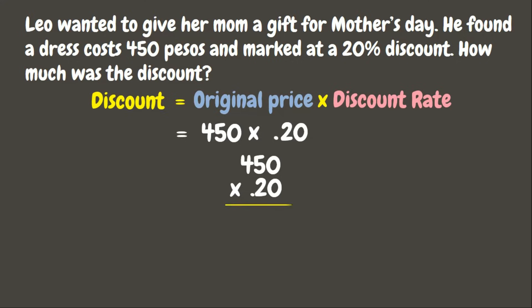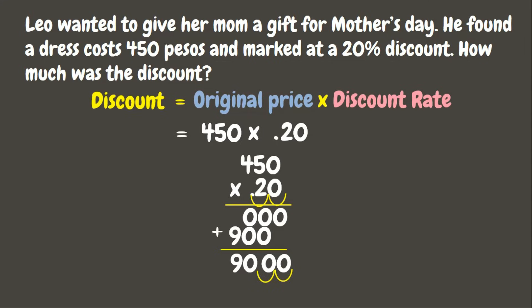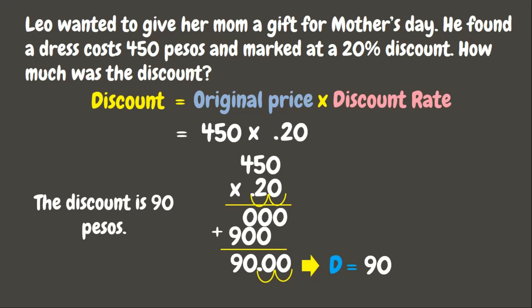There you go — now we have 0.20. Now it's time to multiply: 450 times 0.20. Zero times 450 is zero, and 2 times 450 is 900. Adding those gives us 9000. But since we have two decimal places, we need to move the decimal point in the product two times to the left — one, two. Our final answer is 90. The discount is 90 pesos.